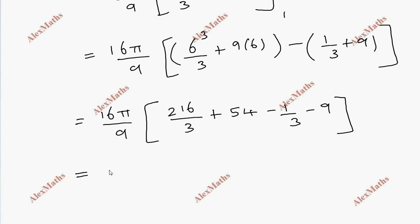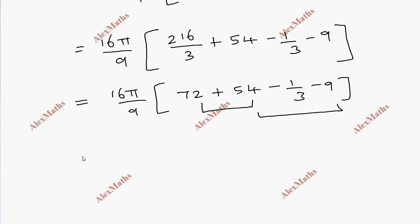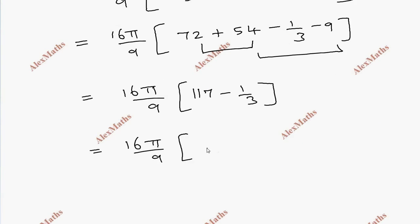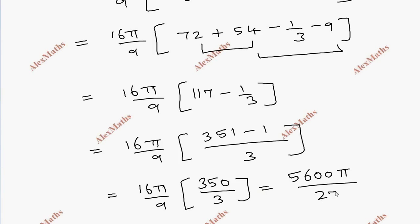So 16π over 9, bracket: 216 divided by 3 plus 54 minus 1 over 3 minus 9. The first part gives 72, plus 54, minus 1 over 3, minus 9. So 72 plus 54 gives 126, minus 9 is 117. Then 16π over 9 times (117 minus 1 over 3). Taking LCM 3 gives 351 minus 1 equals 350 over 3. Total: 16π over 9 times 350 over 3 equals 5600π divided by 27 cubic units.